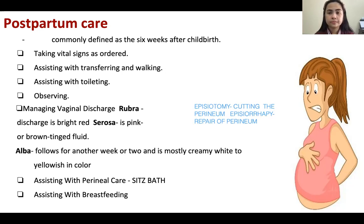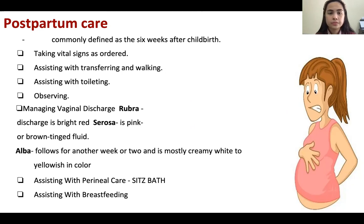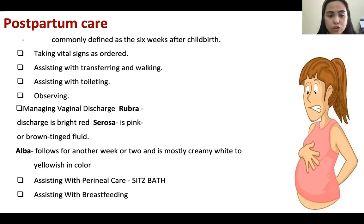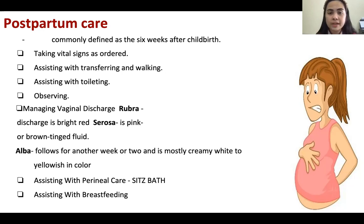Then assisting with breastfeeding. Breastfeeding for the baby is very important because breast milk builds antibodies. Colostrum, which is contained in the breast milk, is very important to boost the immune system of the baby. So we should encourage the mother to do breastfeeding rather than bottle feeding.